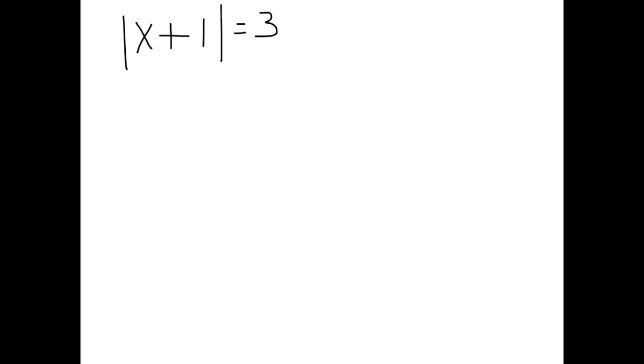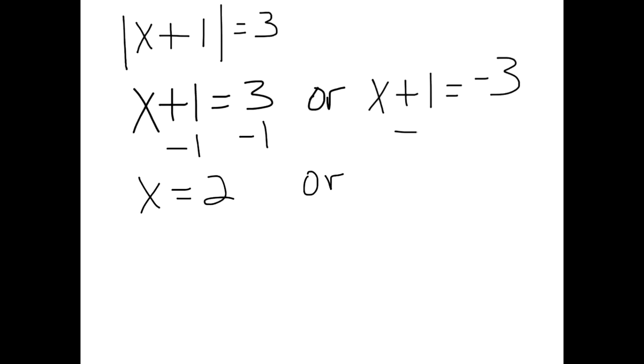Now that we have the absolute value isolated we're going to solve for two equations: x plus 1 equals 3 or x plus 1 equals negative 3. For this equation we'll subtract 1 from both sides, giving us x equals 2. And for the other equation, subtract 1 from both sides, giving us x equals negative 4.